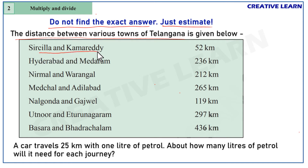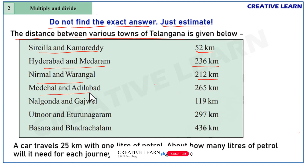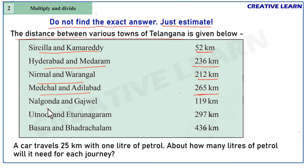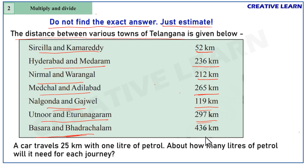The distance between Sirisilla and Kamareddy is 52 kilometers. The distance between Hyderabad and Medaram is 236 kilometers. Nirmal and Warangal are 212 kilometers apart. Medchal and Adilabad are 265 kilometers apart. Nalgonda and Gajwel are 119 kilometers apart. Utnoor and Eturnagaram are 297 kilometers apart. Basara and Bhadrachalam are 436 kilometers apart.